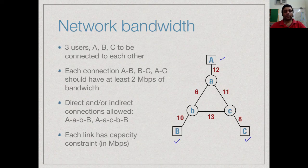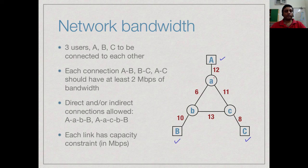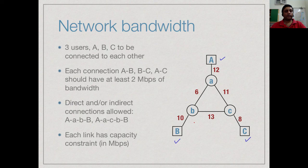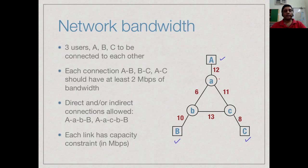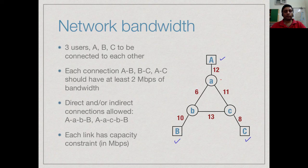So we have a network, an internet network which connects these three users. Our requirement is to ensure that each pair of users A to B, B to C and A to C gets at least 2 megabits per second of connectivity between that pair of users.